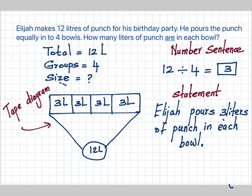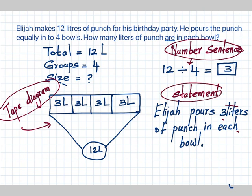So we have the tape diagram, and the number sentence: 12 divided by 4 equals 3. And the statement: Elijah pours 3 liters of punch in each bowl.